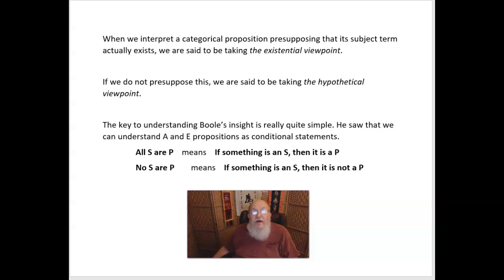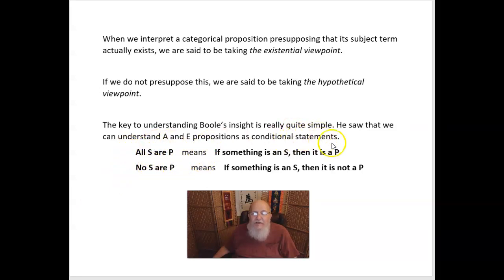When we interpret a categorical proposition presupposing that its subject term actually exists, we are said to be taking the existential viewpoint. If we do not presuppose this, we are said to be taking the hypothetical viewpoint. The key to understanding Boole's insight is really quite simple: he saw that we can understand A and E propositions as really being conditional statements. What 'all S are P' really means is, if something is an S, then it's a P.